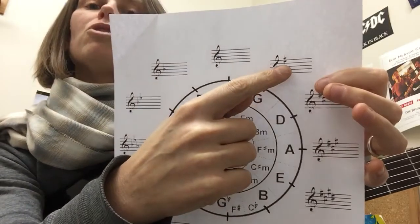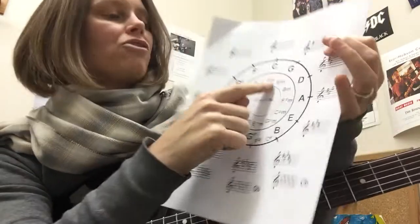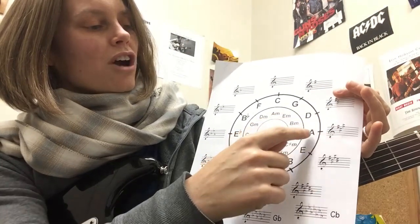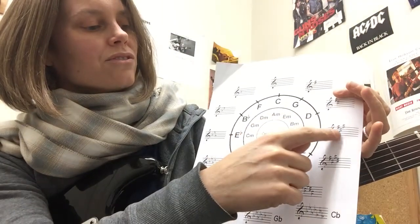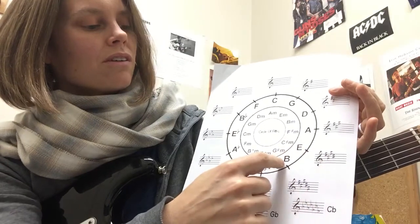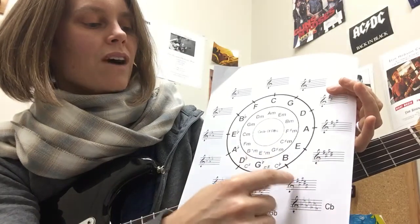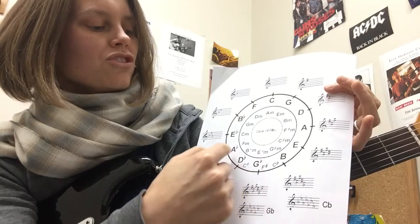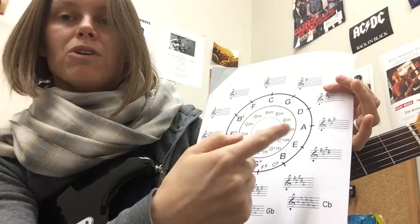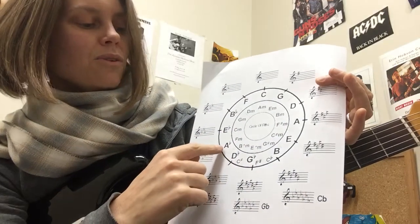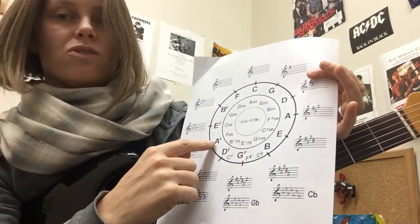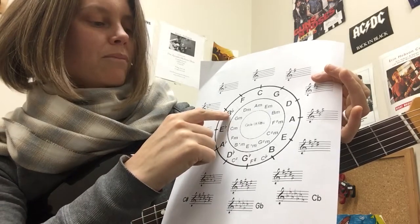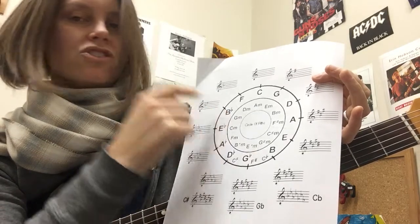G is the next one — that's a fifth away — and you look at the key signature, there's one sharp: F sharp. You go to D, D has two sharps, A has three, E has four, B has five, then F sharp, C sharp, and you just keep going around. A flat is also G sharp, E flat is D sharp, B flat is A sharp, etc. — you keep going and add a sharp to each key.